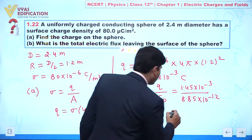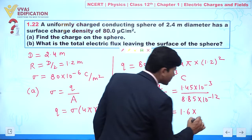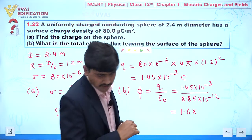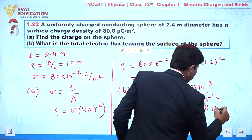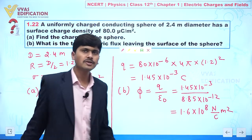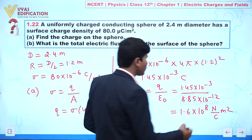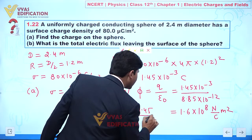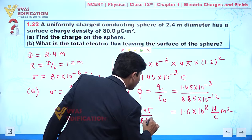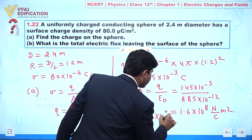If you calculate, you will find here value 1.6 into approximately 10 to the power 8 Newton per coulomb into meter square. You can easily calculate, you can also calculate like this - 1.45 divide 8.85 into 10 to the power 9.